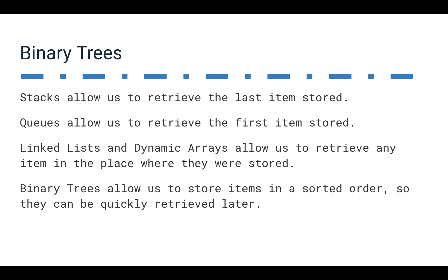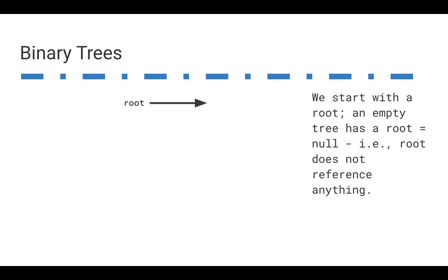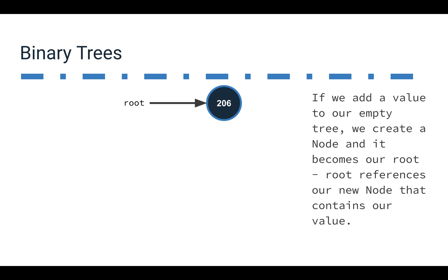Binary trees kind of break this model a little bit. They allow us to store items in a sorted order so that they can easily be retrieved at a later time. When we create a binary tree, the structure looks kind of like a linked list. We start with a root, just like we started with a head in a linked list, and there's nothing there. But when we add a value — say 206 — we create a node and that node becomes our root, containing the value 206.